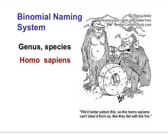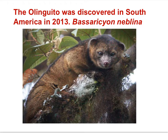The binomial scientific name for humans is Homo sapiens — genus and species. When a new species is discovered, as this Olinguito was in 2013, it is given a name using the binomial system. Basariscion nablina is the name of this organism. The value of using binomial nomenclature is that it provides specificity that avoids the confusion of common names like Olinguito, since the same common name can often be used for many different species, like the word daisy or chimpanzee or grass.